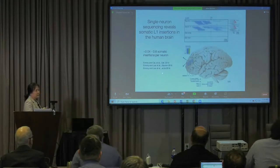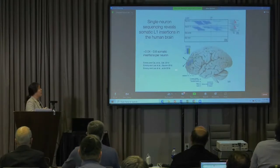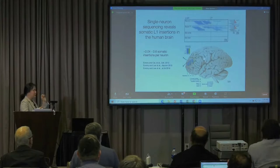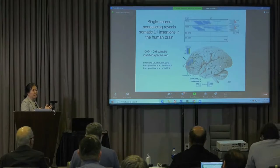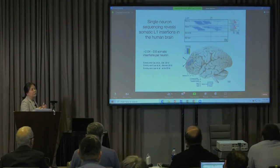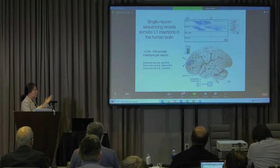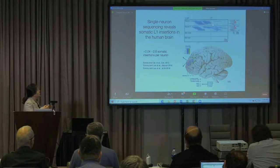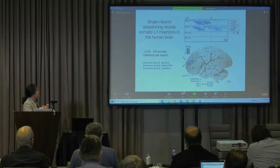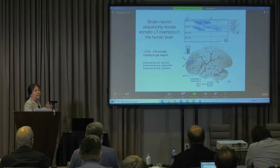In our earlier studies in collaboration with Chris, we examined single neuronal genomes from neurotypical human brains and identified multiple somatic transposon insertions. L1, one of the most active transposons in the human genome, showed Line 1 insertions in only two single neurons, but the patterns were completely absent in bulk DNA samples from the same donors.